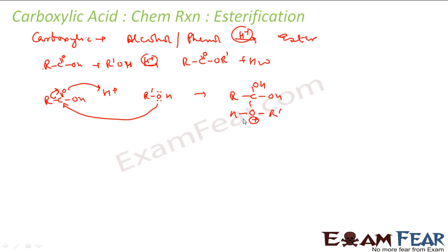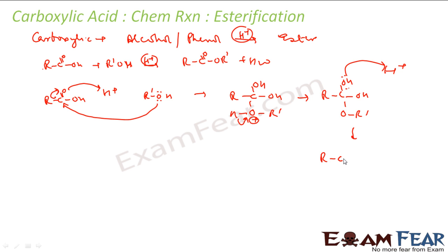The oxygen doesn't want a positive charge, so it asks hydrogen to leave, giving R-C(OH)(OH)(OR'). There are two OH molecules in this intermediate. H+ then attacks one of them, forming H2O+ which is a good leaving group. It goes off and carbon gets a positive charge. Carbon doesn't want the positive charge, so it asks the adjacent hydrogen to leave, oxygen gets a negative charge, and they form a double bond.